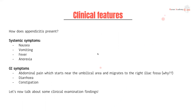How does appendicitis present? In terms of systemic symptoms, you could have nausea, vomiting, fever, and anorexia — these are all important features to ask and elicit on a history. In terms of GI symptoms, I'm sure you're familiar with the typical appendicitis pain that usually starts in the periumbilical area and then migrates to the right iliac fossa.